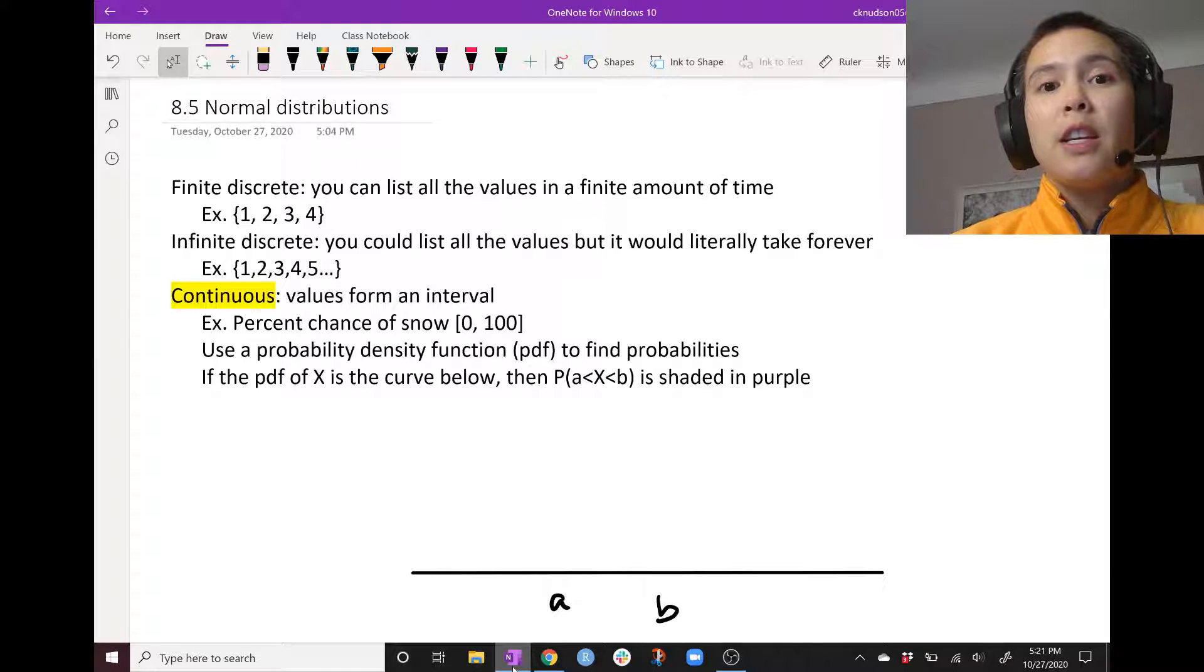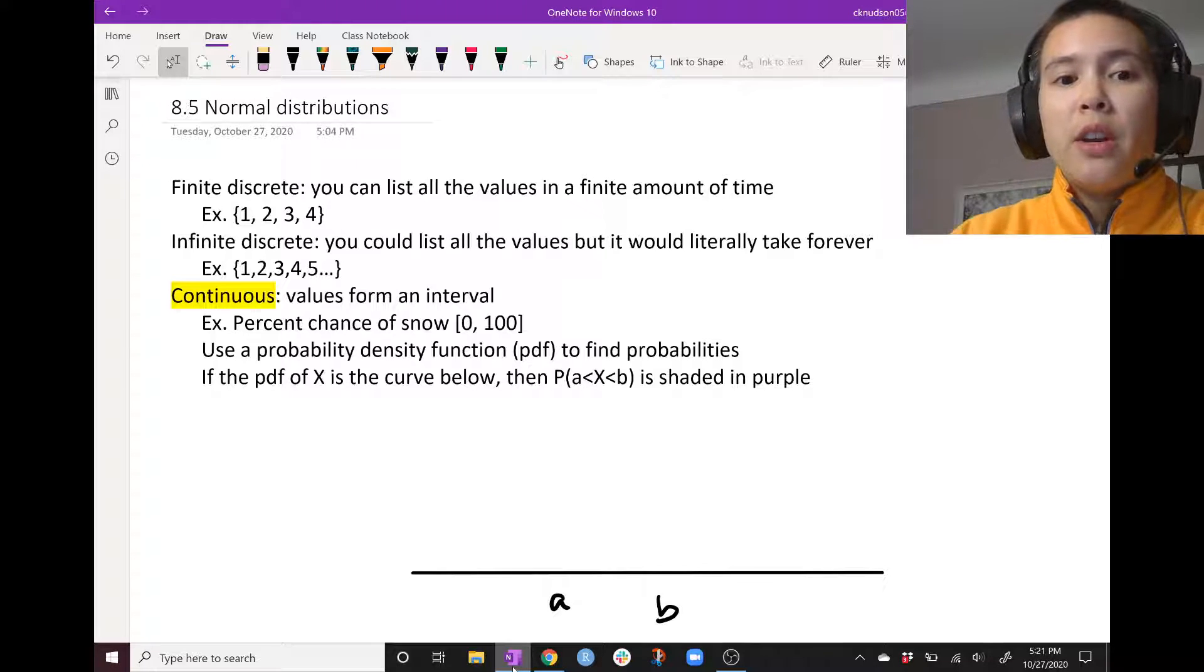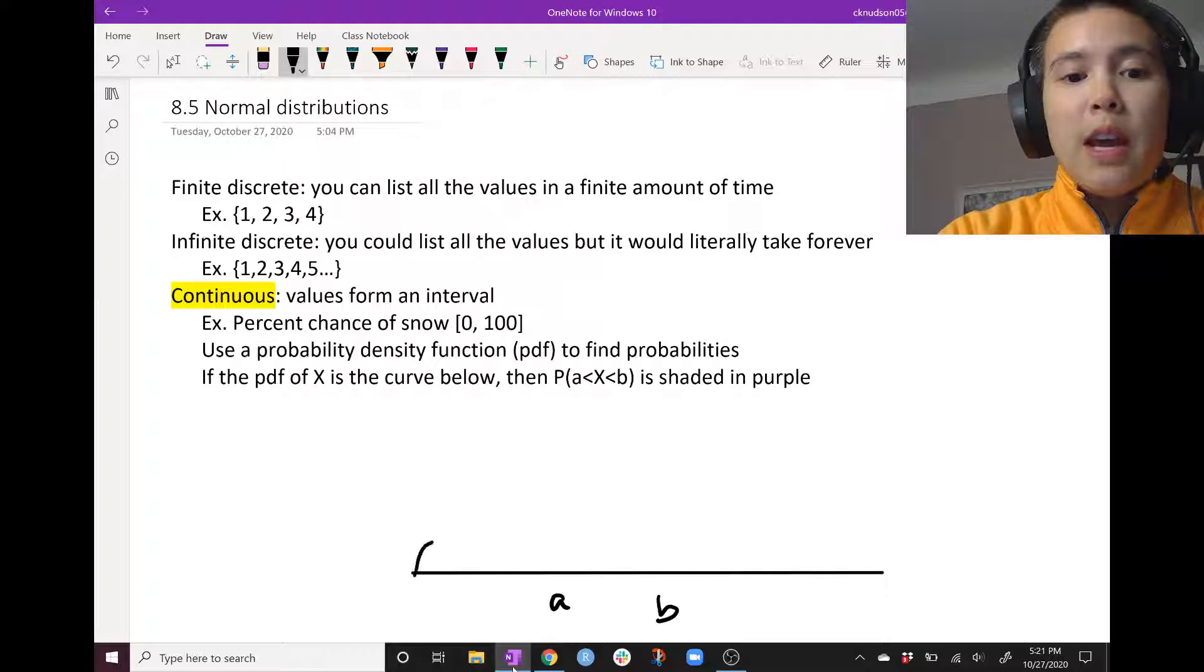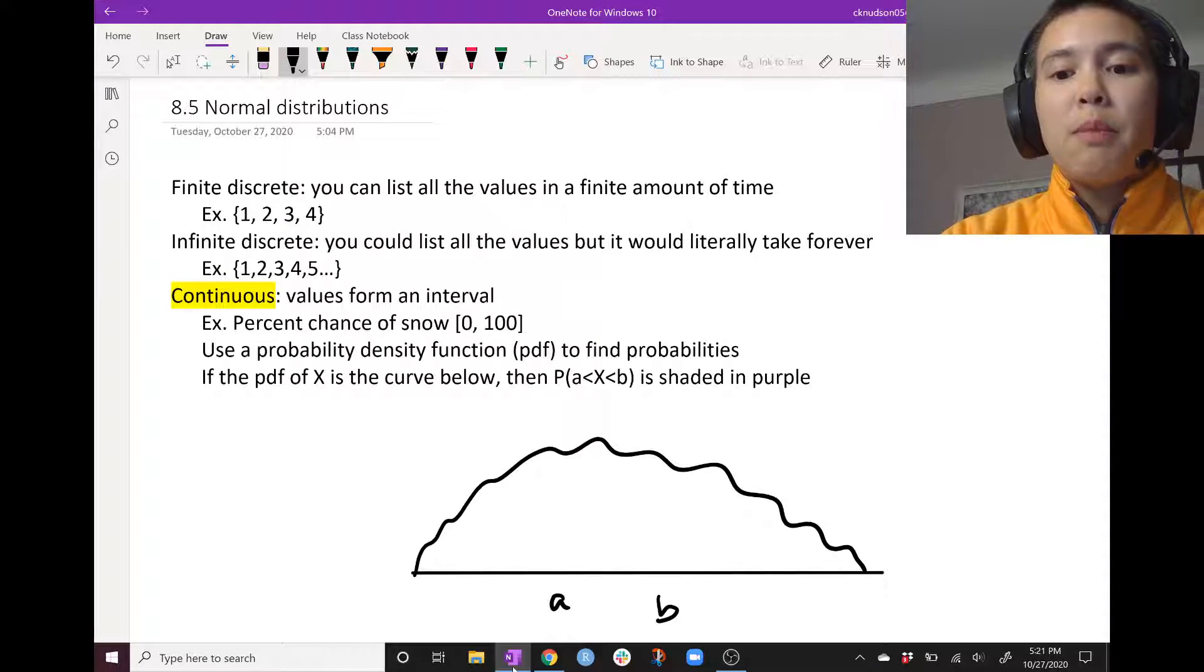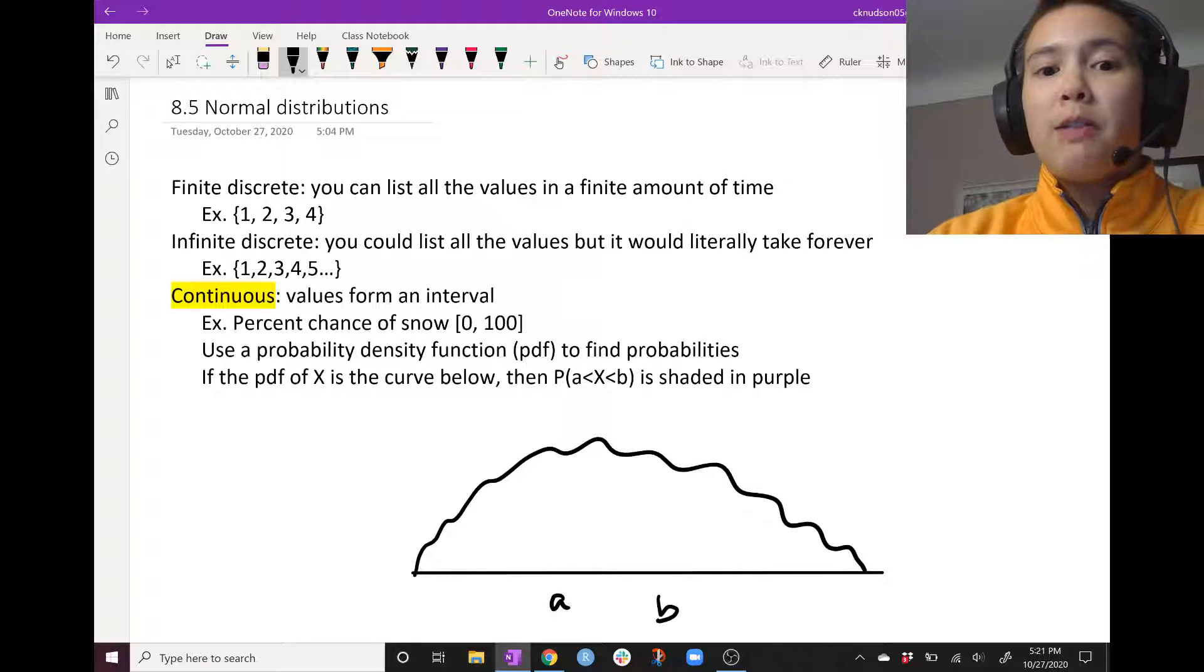And what we do with that PDF is we find the area under it. So for example, say that we have this is the PDF for our random variable x. And we want to find the probability that x is between a and b.